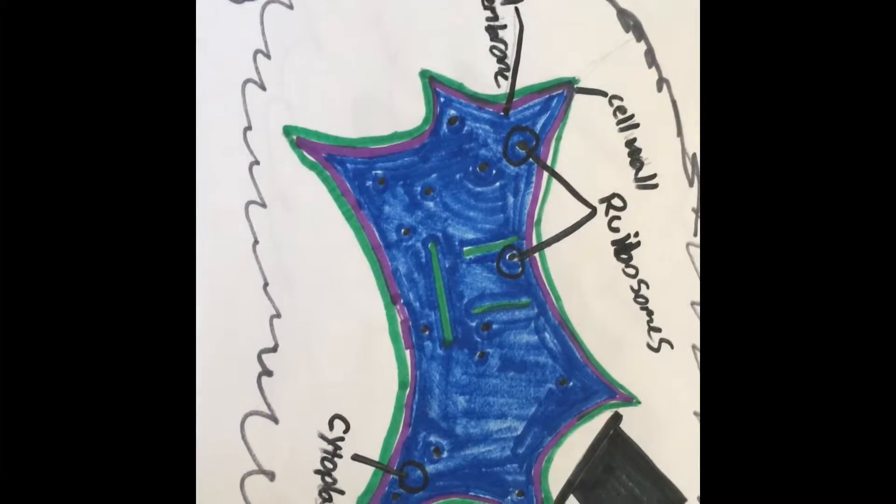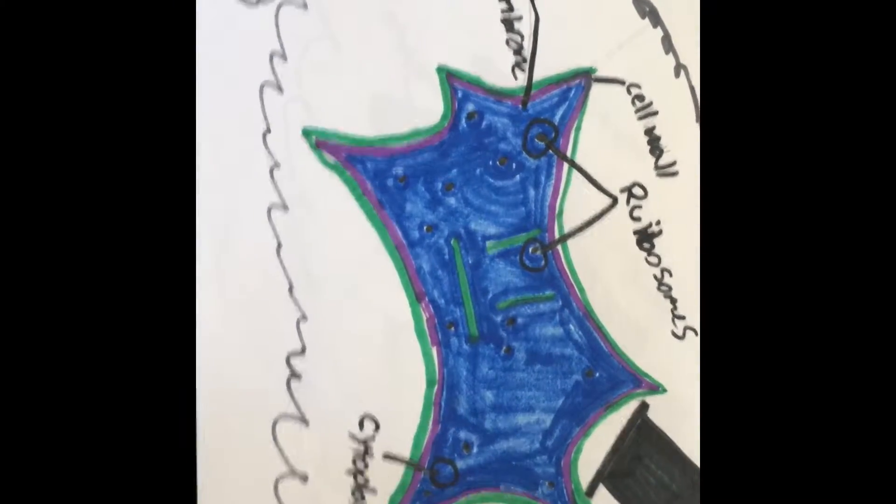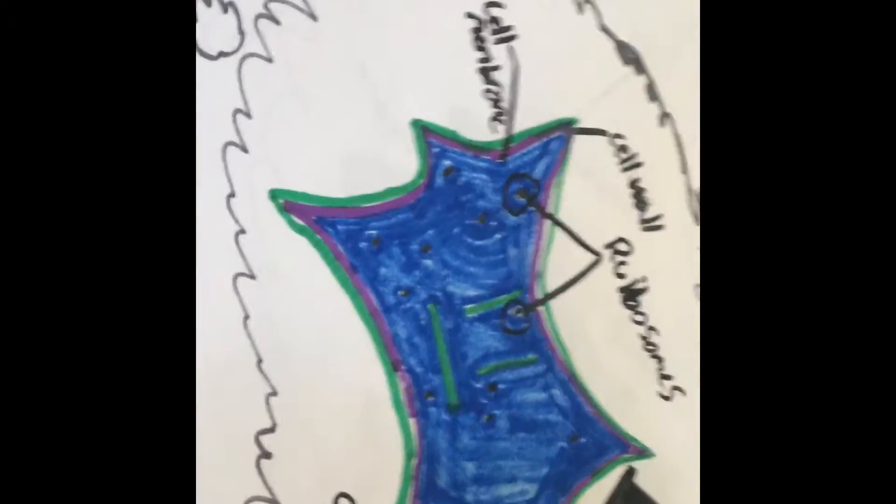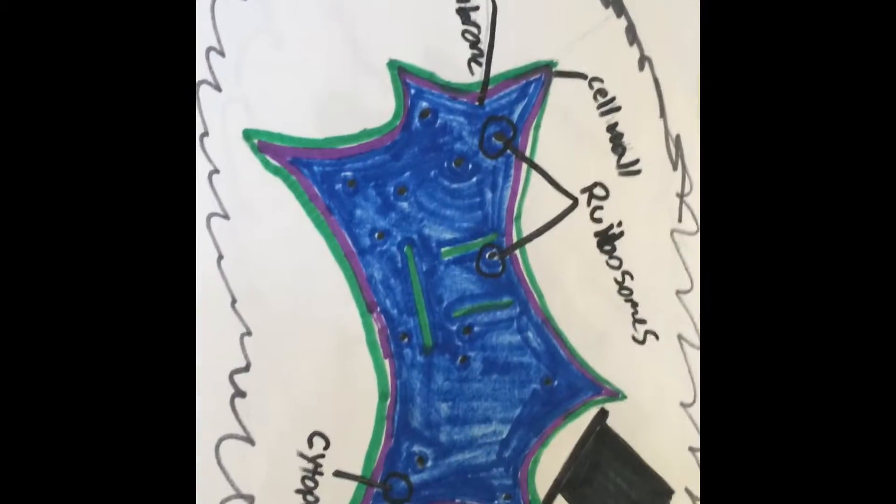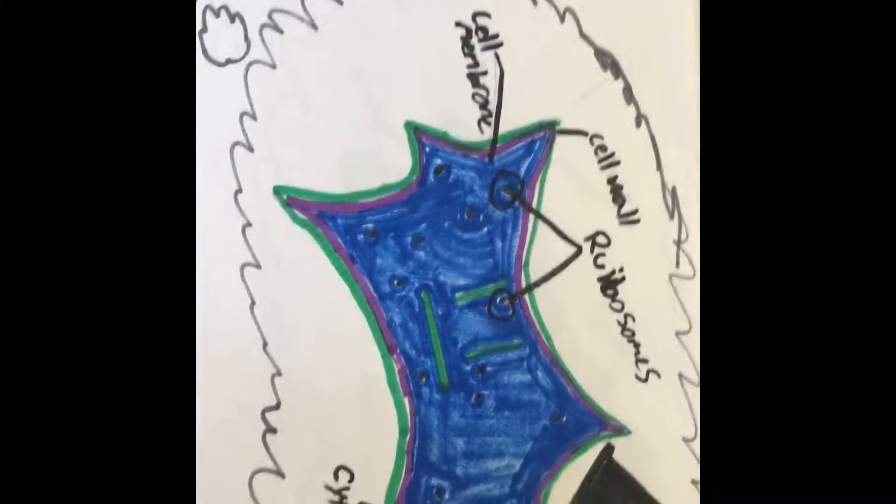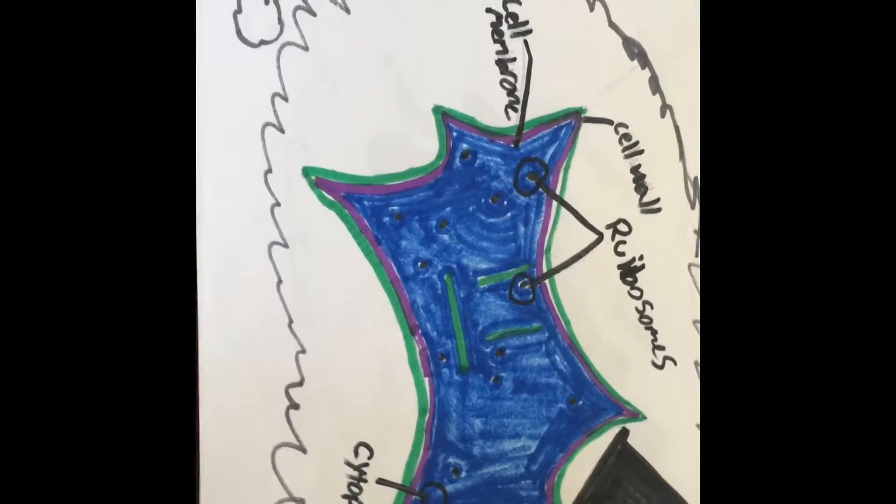He thought about all of the dying ribosomes that created proteins for all of the cells, and the cytoplasm that maintained the pressure of all of his millions and trillions of cells.